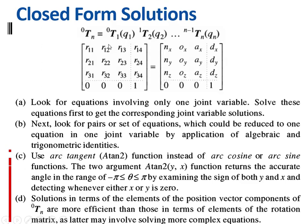We already know what this transformation matrix is and how to obtain it. Every transformation matrix — from frame 0 to 1, 1 to 2, 2 to 3, and so on — always has one variable. That variable can be theta if it is a revolute joint, or d if it is a prismatic joint. This matrix represents the overall transformation matrix obtained after solving this part.